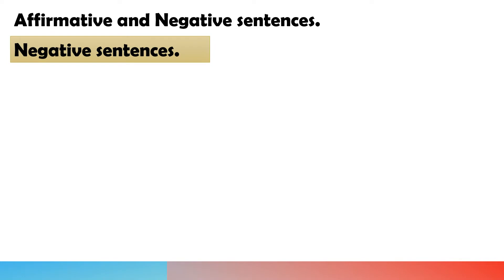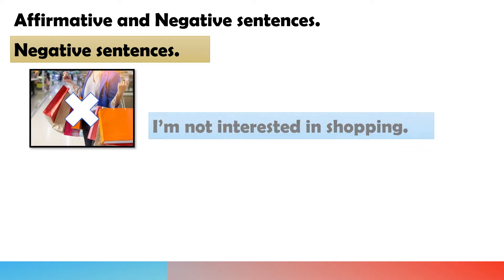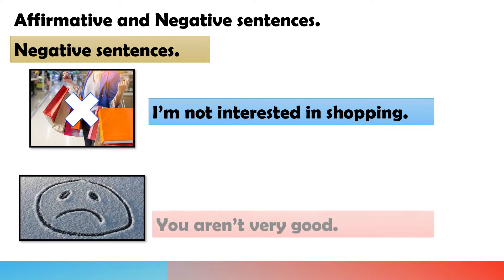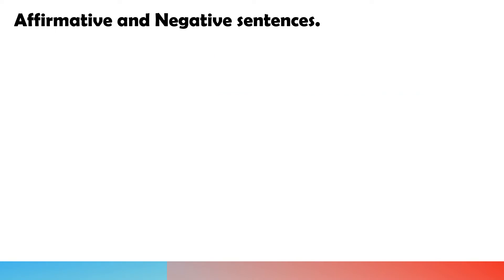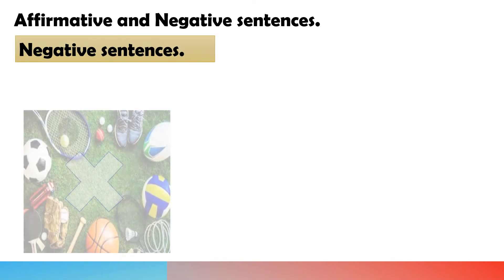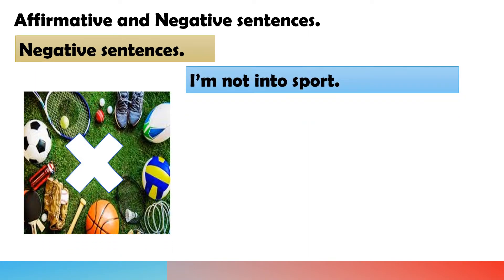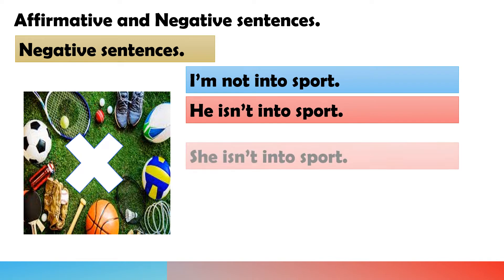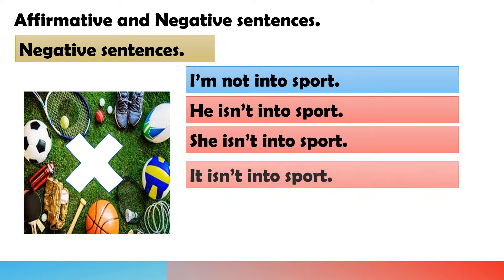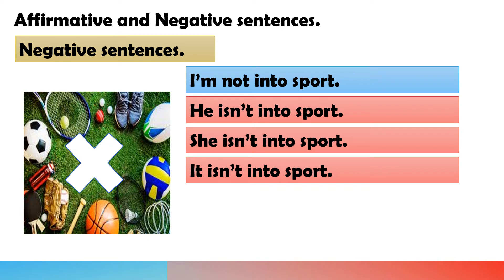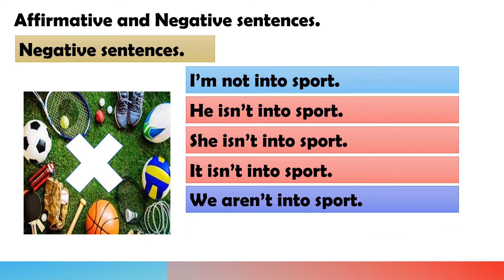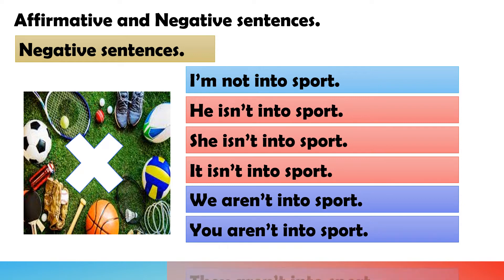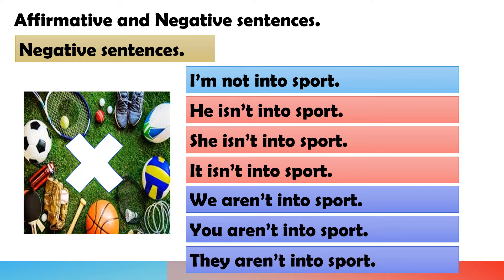Negative sentences: I'm not interested in shopping. You aren't very good. I'm not into sports. He isn't into sports. She isn't into sports. It isn't into sports. We aren't into sports. You aren't into sports. They aren't into sports.